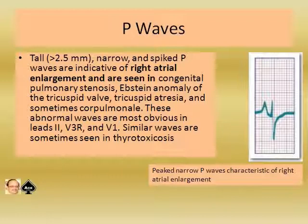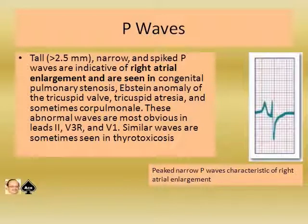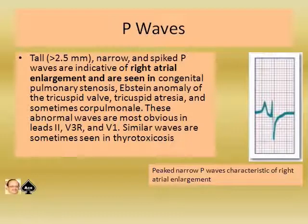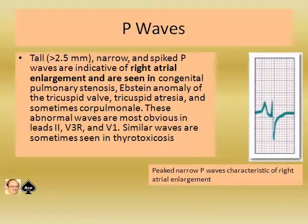In this example I am showing a tall P wave more than 2.5 millimeters, which is narrow and spiked. As earlier told, it shows right atrial enlargement and it is seen in pulmonary stenosis, Ebstein's anomaly of the tricuspid valve, tricuspid atresia, and sometimes cor pulmonale and thyrotoxicosis.